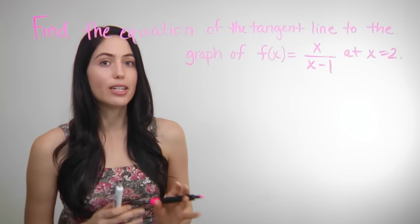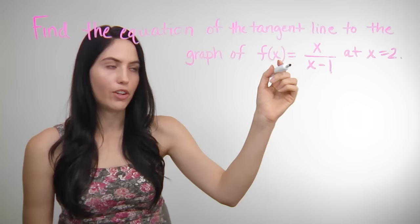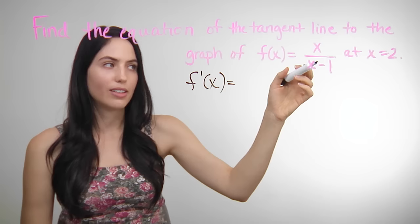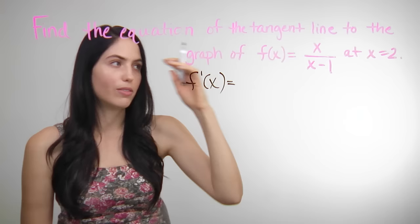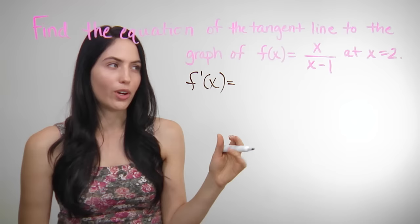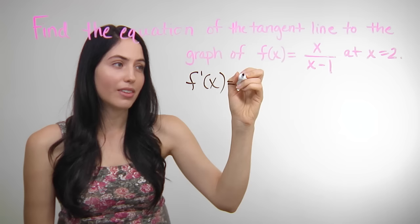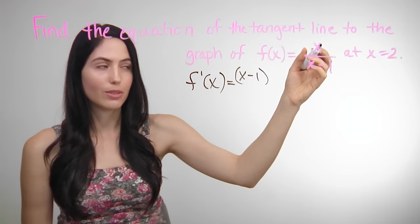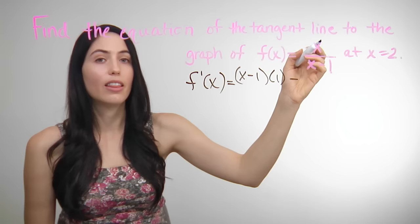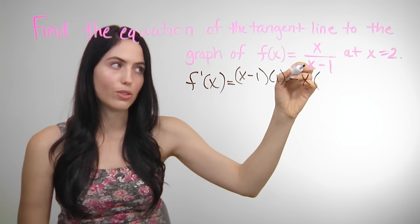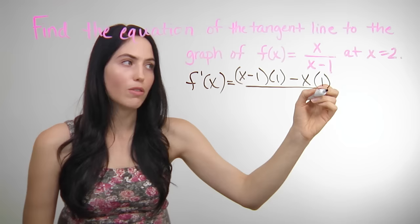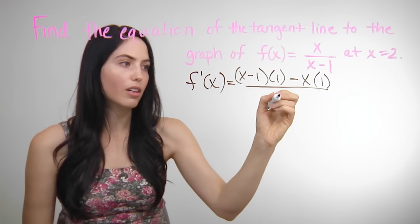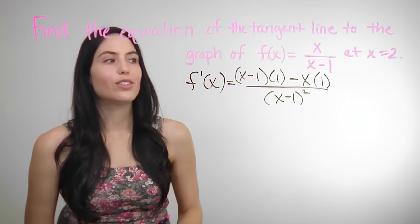The first step is still find the derivative of your given equation — you want f prime of x. Since your equation is x over x minus 1, this is a fraction — a quotient. So you'll have to use the quotient rule to take the derivative. It's the bottom of the function times the derivative of the top. The derivative of x is just 1, minus the top expression x as-is, times the derivative of the bottom, which is 1. And then it's all over the bottom squared — x minus 1 squared.